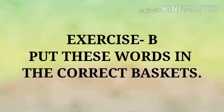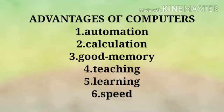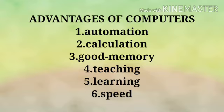Page 12, Exercise B: put these words in the correct baskets — advantages of computers. In your book you can see there are options given which you have to put in the correct baskets. In the basket of advantages of computers, number one is automation. Automation is the ability to automatically control the working of machines or processes. Next is it helps in calculation — computers can do hundreds of difficult calculations very quickly and accurately.